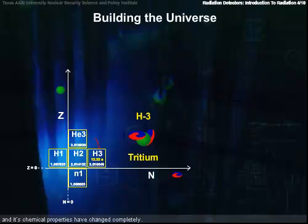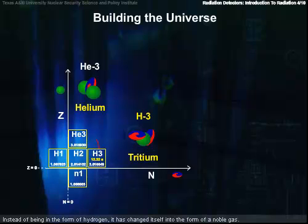And its chemical properties have changed completely. Instead of being a form of hydrogen, it's changed itself into a noble gas. It's also changed itself in terms of nuclear reactions. Tritium is used in H-bombs. Helium-3 readily absorbs neutrons, but that's it, no big bangs.